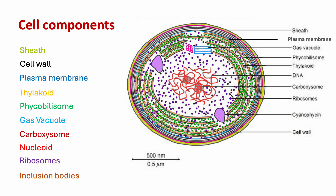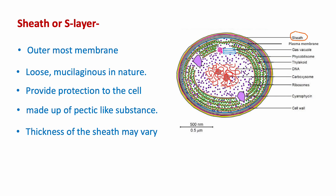The S-layer is the outermost membrane. This loose mucilaginous layer is known as the sheath or slime layer. The sheath is made up of pectin-like substances, which is why it is mucilaginous in nature. It provides protection to the cell from unfavorable conditions and also keeps the cell moist. The thickness of the sheath varies depending on environmental conditions.